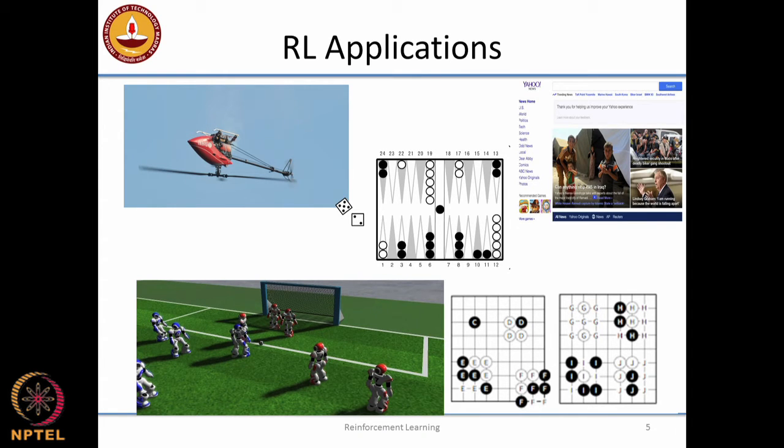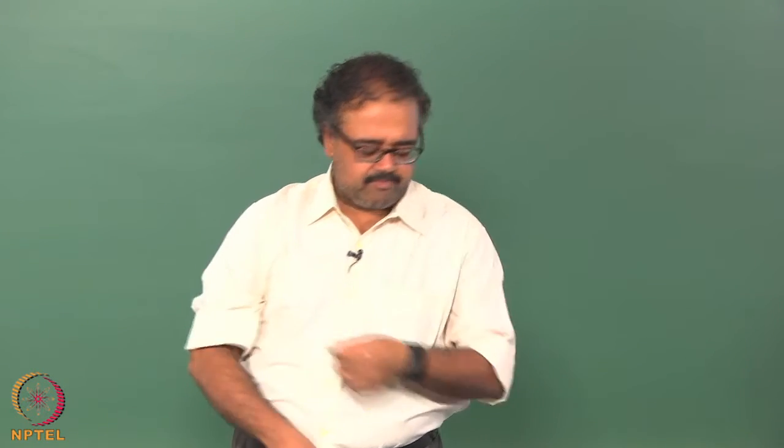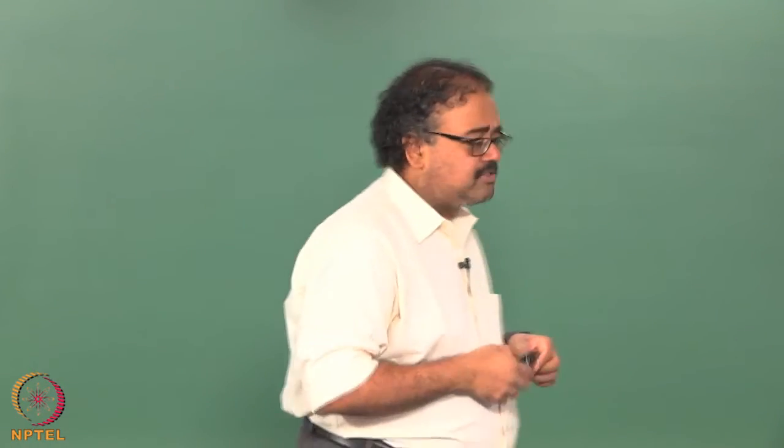He trained backgammon using self-play, and came to a point where TD-Gammon, as he called it, was even better than the best human player of backgammon in the world. They actually had a head-to-head challenge with the human champion — there is a world championship of backgammon, apparently very popular in the Middle East. He challenged the human champion, much like IBM tends to do, and TD-Gammon beat the world champion. We had a reinforcement learning agent that was the best backgammon player in the world.